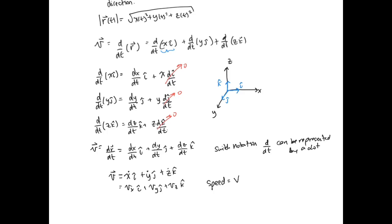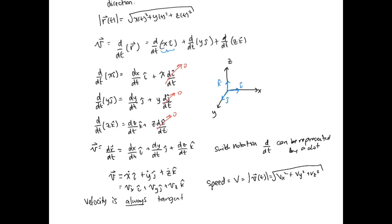The magnitude of the velocity vector is the speed. Speed equals the magnitude of v of t, which is the square root of vx squared plus vy squared plus vz squared. As derived in an earlier video, velocity is always tangent to the path of motion.